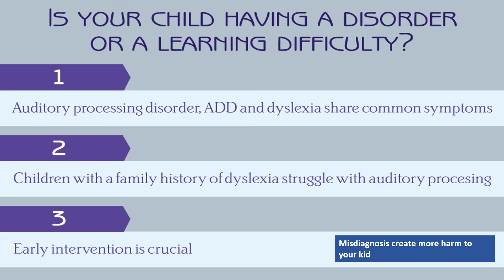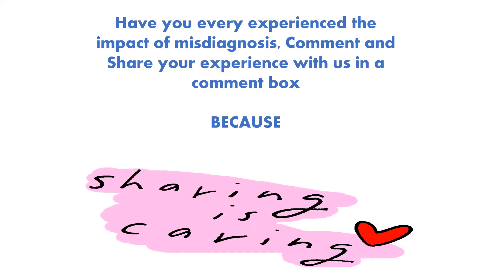Three disorders that overlap with similar symptoms are: Auditory Processing Disorder, Attention Deficit Disorder, and Dyslexia. Children with a family history of dyslexia may also struggle with auditory processing, and early learning disability intervention is crucial. There is a myth that children don't show features of dyslexia until age five — this is not true. Children show signs earlier that are important to recognize and address. Have you experienced the impact of misdiagnosis? Comment and share your experiences with us.